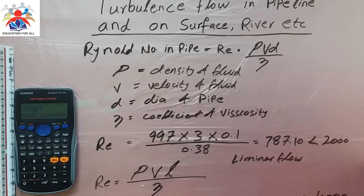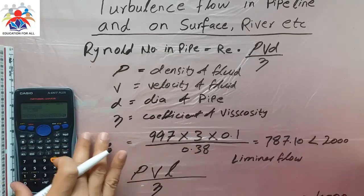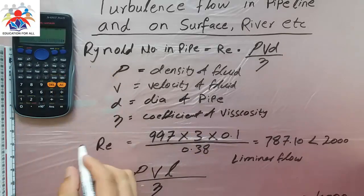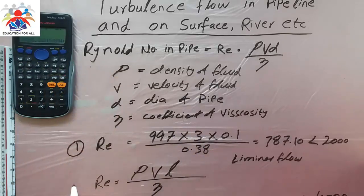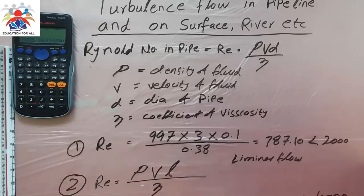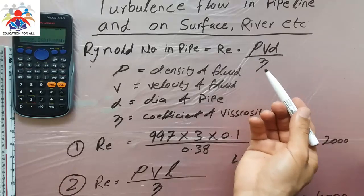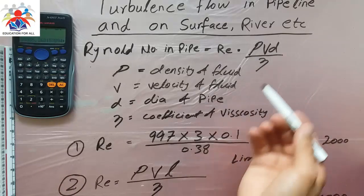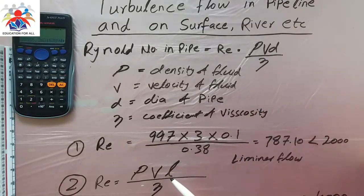So the first formula is for the pipeline and the second one is for the river or canal bed. The formulas are slightly different — in the first example we use diameter and in the second example we use length. That's all for today, thank you for watching my video. Please don't forget to subscribe to my channel.